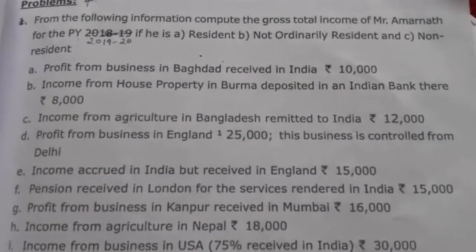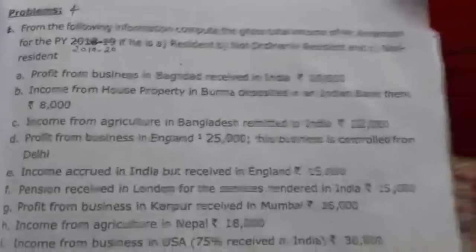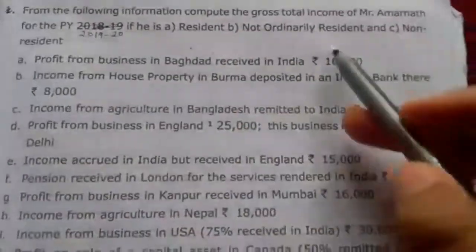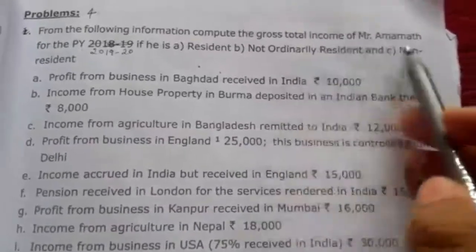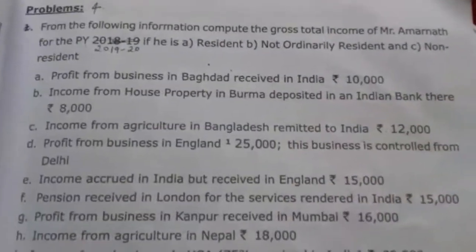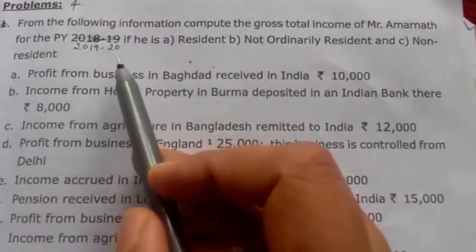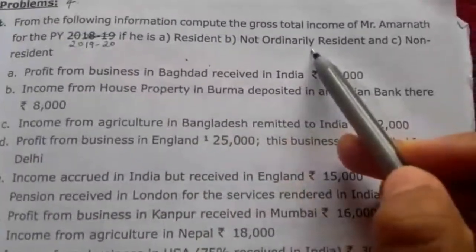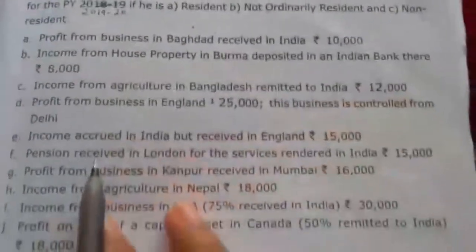Now illustration number 4. Compute the gross total income of Mr. Amarnath for the previous year 2019–20 if he is: first, a resident (ordinarily resident); second, not ordinarily resident; and third, non-resident.